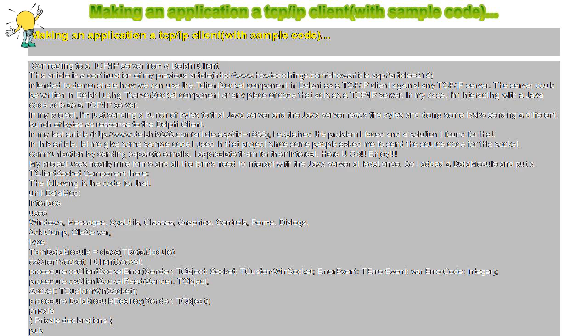Procedure csClientSocketError — Sender: TObject; Socket: TCustomWinSocket; ErrorEvent: TErrorEvent; var ErrorCode: Integer. Procedure csClientSocketRead — Sender: TObject; Socket: TCustomWinSocket. Procedure DataModuleDestroy — Sender: TObject. Private declarations. Public — FWaiting: Boolean. Public declarations. End. Var dmDataModule: TdmDataModule.